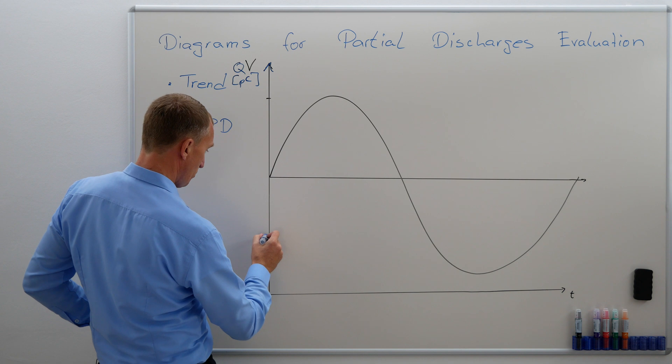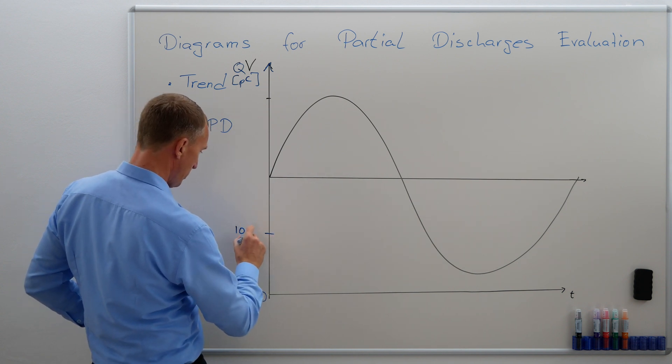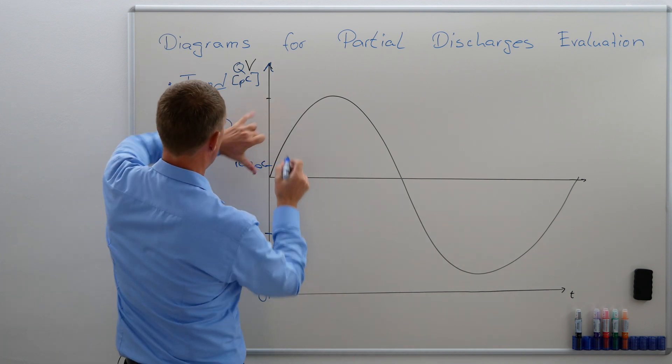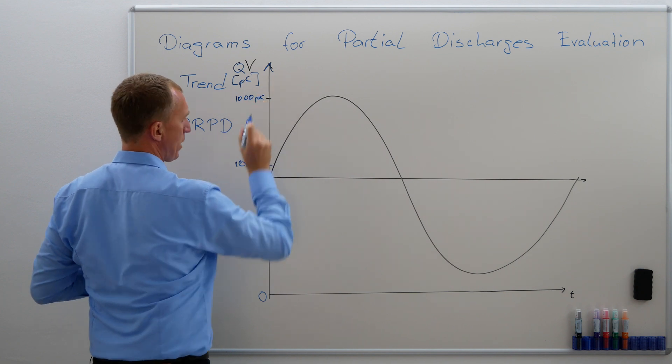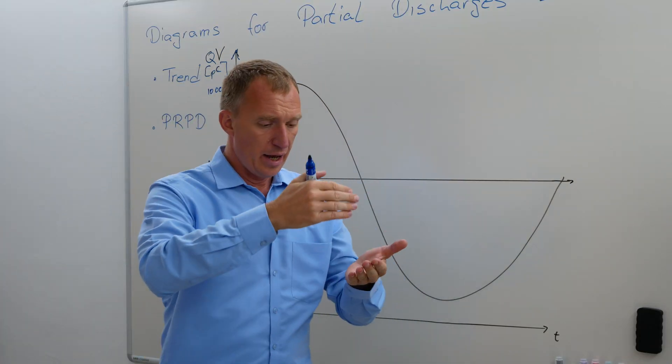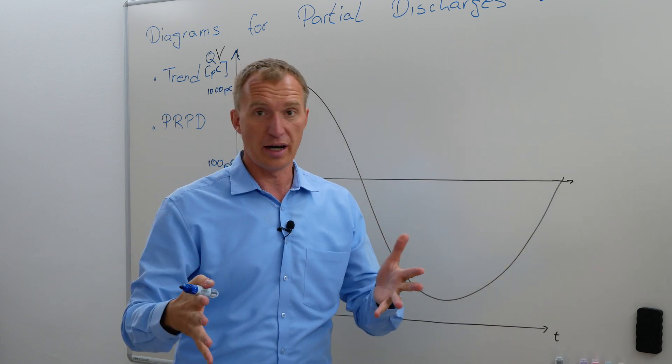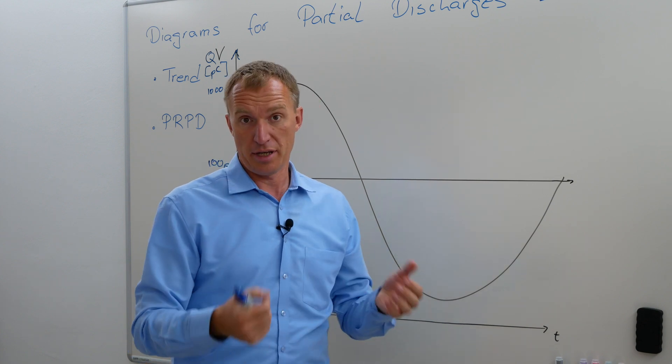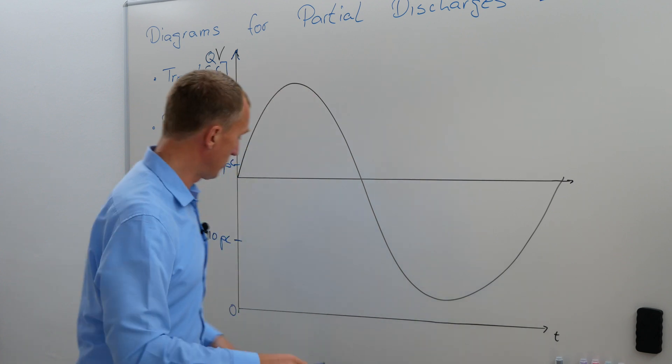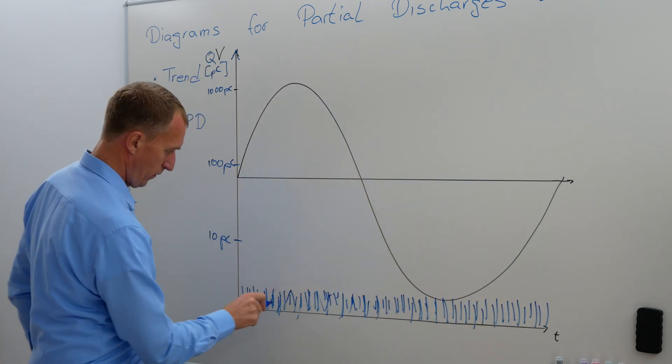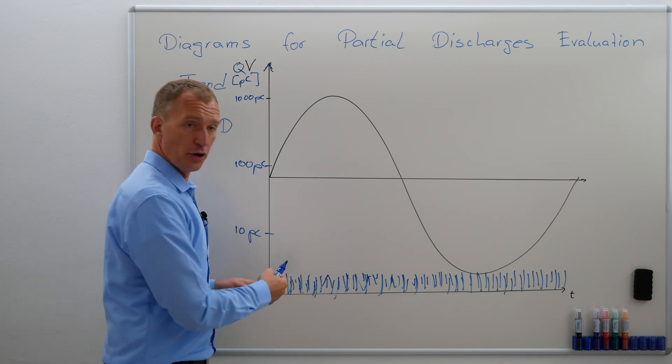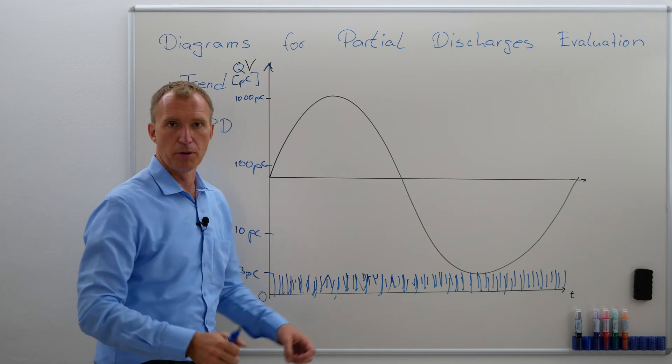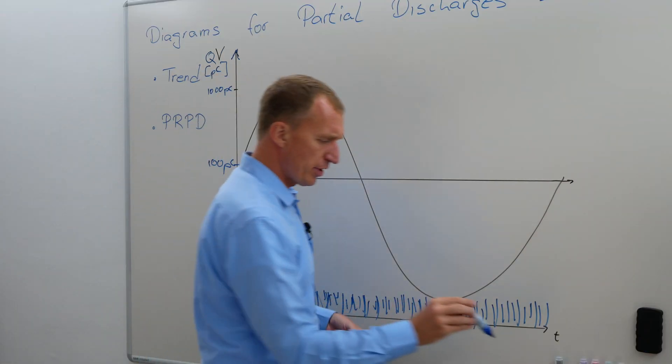So this would be 10 picocoulombs, then 100 picocoulombs, and then 1000 picocoulombs. Now let's imagine I'm having noise, and the noise is happening all of the time, very often irrespectively of my high voltage signal. It comes from different devices. So I have a noise floor here of around 3 picocoulombs.